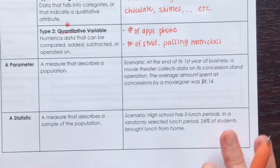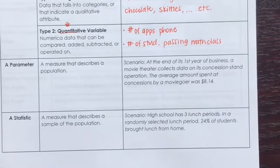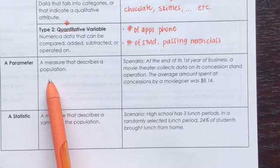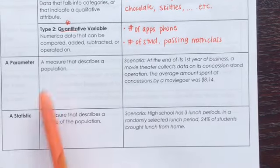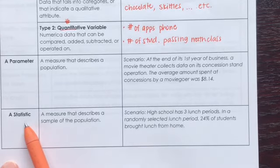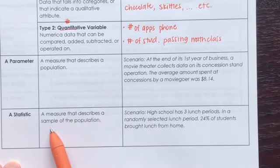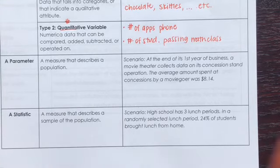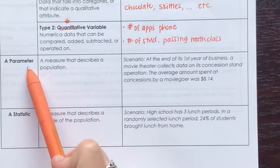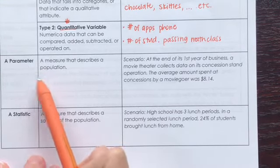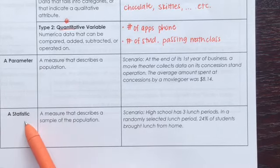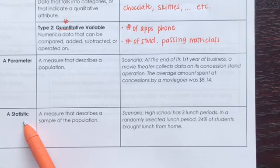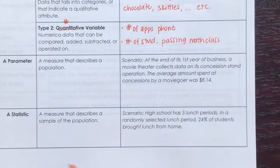Last two parts: a parameter and a statistic. A parameter is something that describes a population. A statistic is something that describes a sample of the population. So population is like the big overall umbrella — parameter describes that big umbrella. Statistic only talks about the sample, the smaller piece that's underneath that larger umbrella.